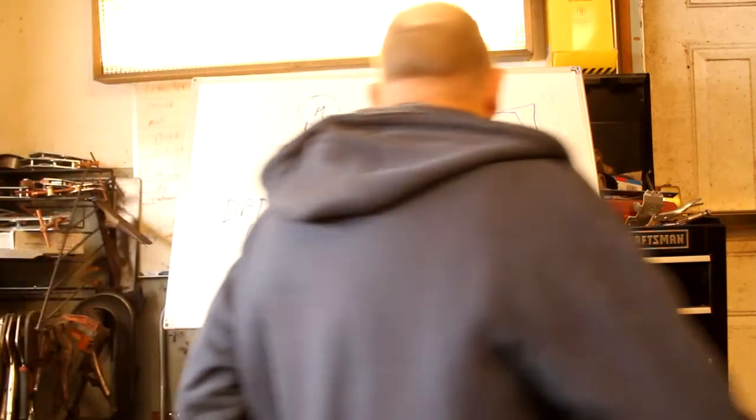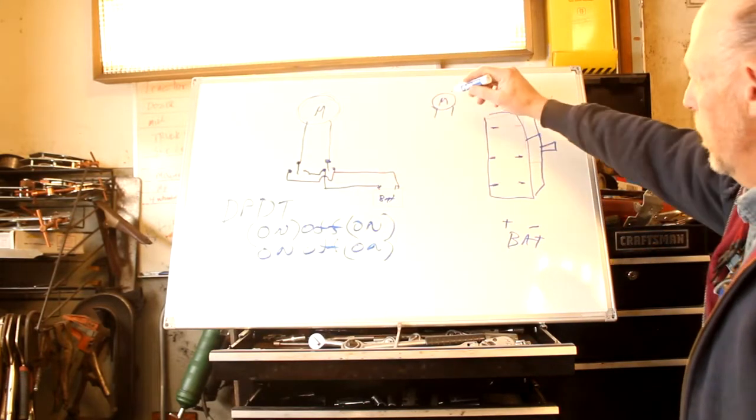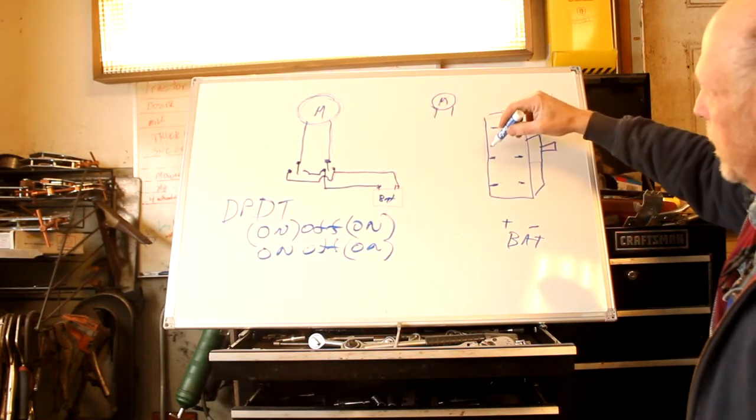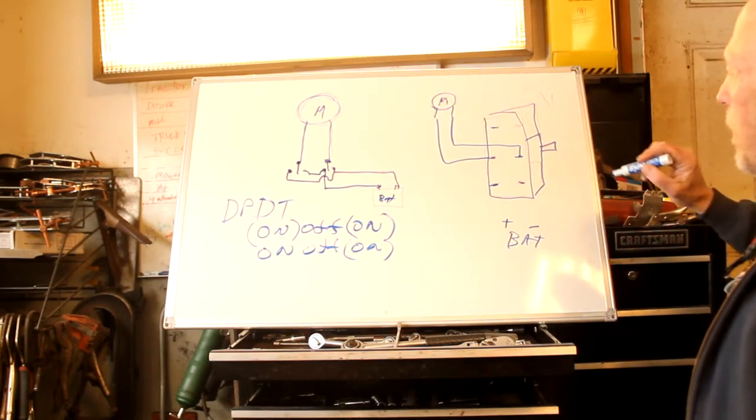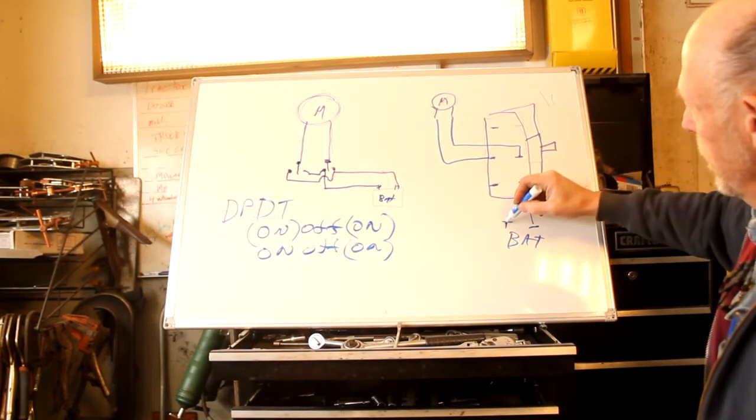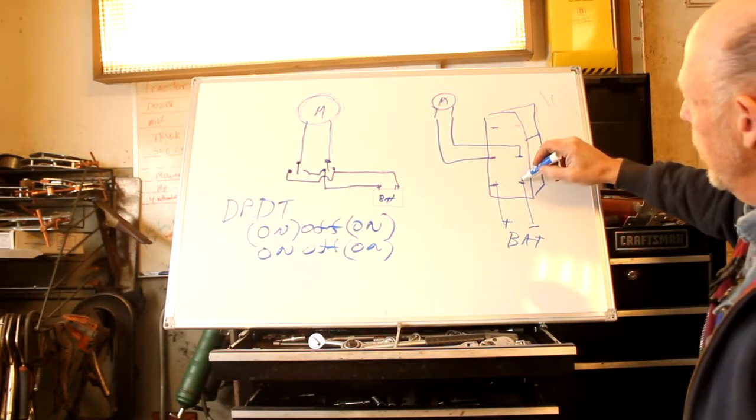So over here this is a picture of the switch, the motor, and the battery. What we're going to do is the motor actually hooks to the center like so. One side of the switch goes to minus, one side goes to plus.